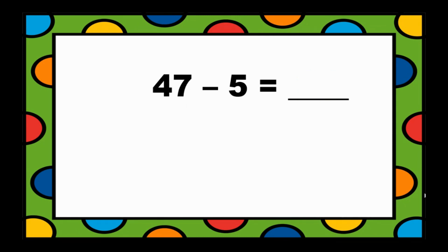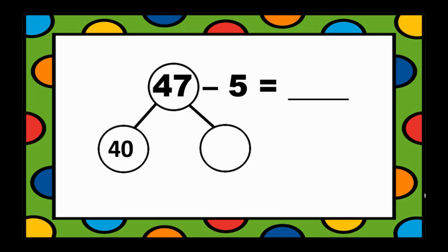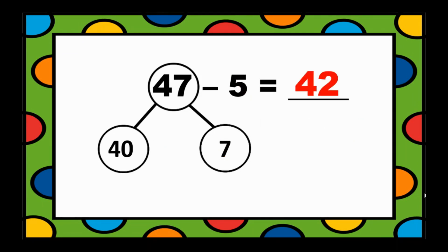Another example. We have 47 minus 5. Let's use the number bonds to make 47 — 40 and 7 will make 47. Then we subtract the 1s: 7 minus 5 equals 2. Add the 2 to 40: 40 plus 2 equals 42. So, 47 minus 5 equals 42.